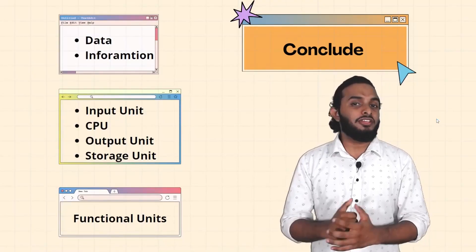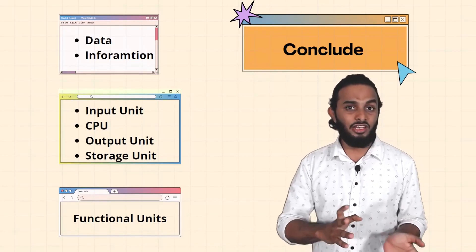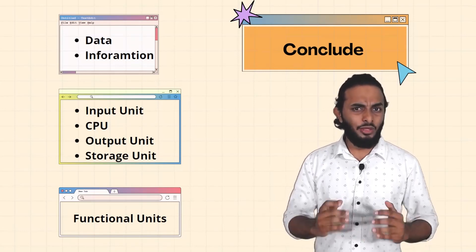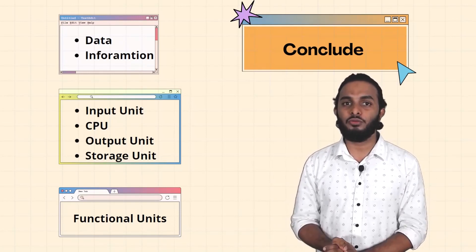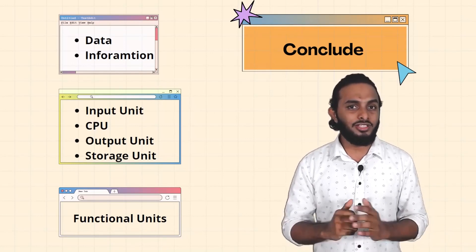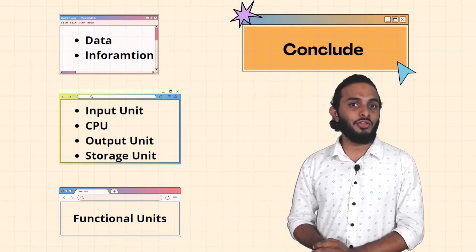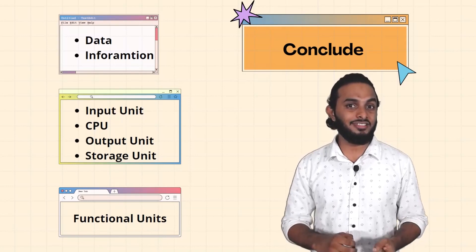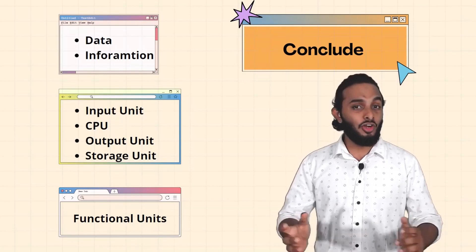So what did we talk about today? Data, how data is used, how data becomes information, data processing, and data getting processed. In this session we discussed functional units: input units, output units, CPU with ALU, CU, and registers, storage devices with primary memory (RAM, ROM) and secondary auxiliary memory (hard disk, CD, pen drive), and computer characteristics. That is all about today's session — bye!